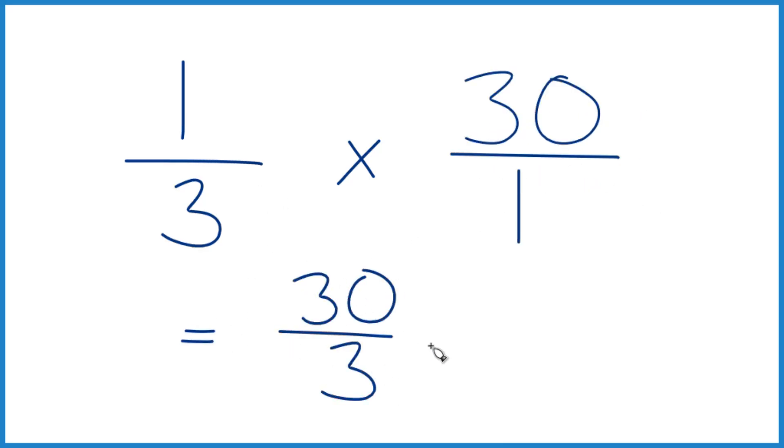30 divided by 3 equals 10. So one-third of 30 is 10.